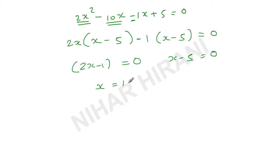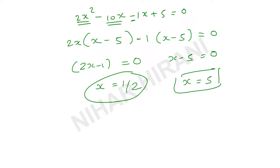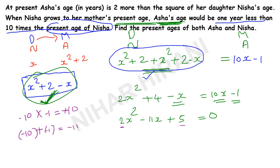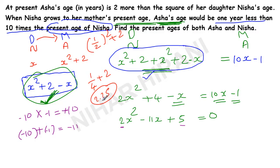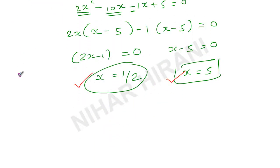So x equals one half or x equals 5. Now which one is the correct answer? Case 1: if the daughter is half a year old, then the mother's age would be one half squared plus 2, which is one fourth plus 2, that's 2.25 years. A mother being 2.25 years old is not practically possible. So our answer is x equals 5. The daughter Nisha's age is 5 years, and Asha's age is 5 squared plus 2, which is 27 years. I hope you find it useful. Thanks for watching.